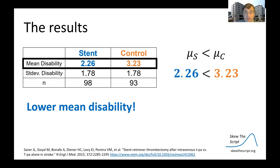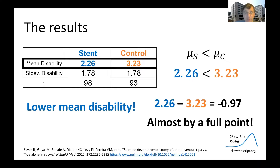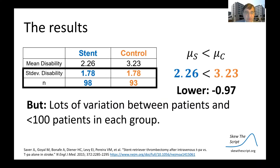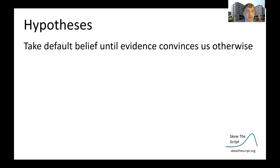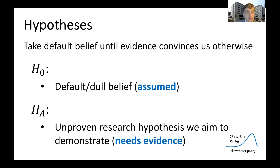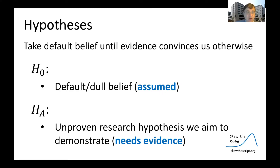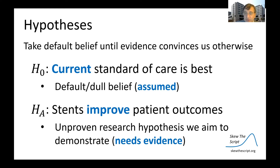There was lower mean disability by a dramatic amount — a one-point change on this scale is a very big difference in outcome for patients. But there was lots of variation between patients and fewer than 100 in each group, so we have to ask: could the difference have happened by chance alone? The default belief is that the current standard of care is best and the new treatment does not improve outcome. The alternative hypothesis is that stents improve patient outcomes.